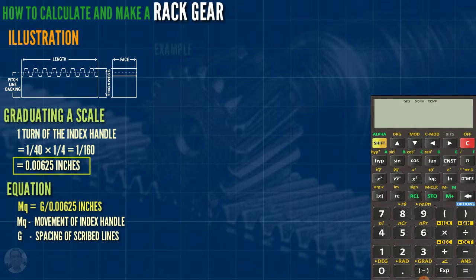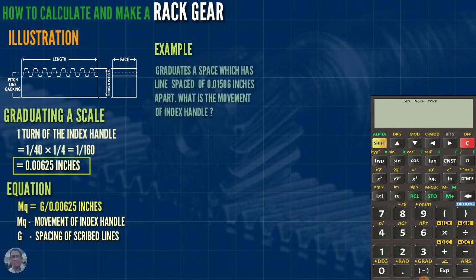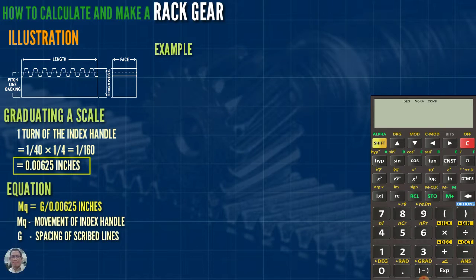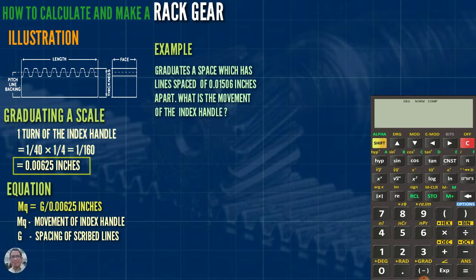Example: A graduated scale has a line spacing of zero point zero one five zero six inches apart. What is the movement of the index handle?